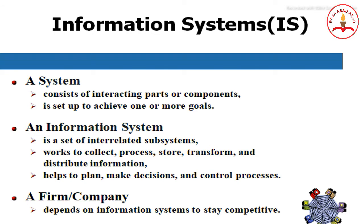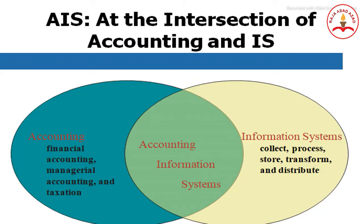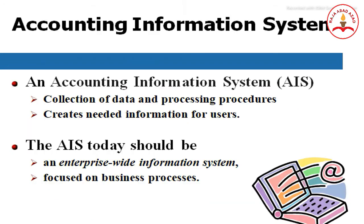The accounting field includes financial accounting, managerial accounting, and taxation. The accounting system of old is the management information system (MIS), which provided both financial and non-financial information. The accounting information system sits at the interaction of accounting and information systems — collecting, processing, storing, transforming, and distributing data to create needed information for users.